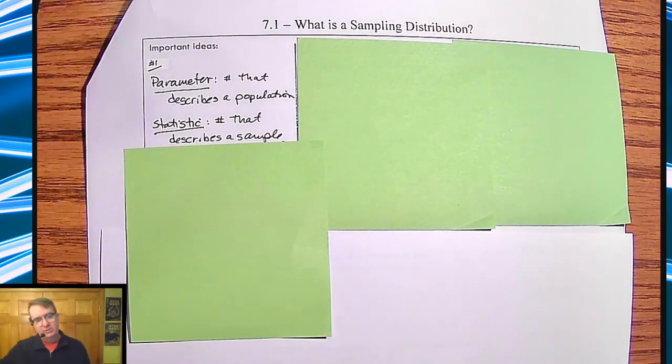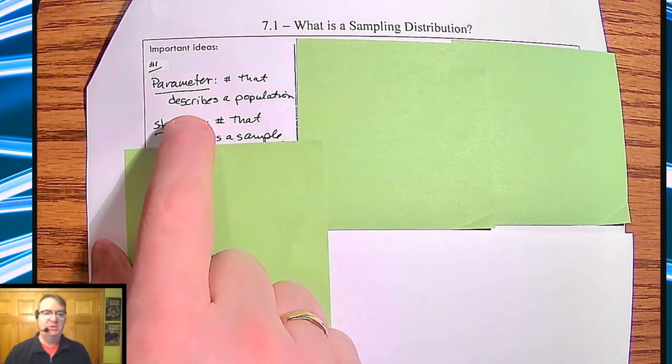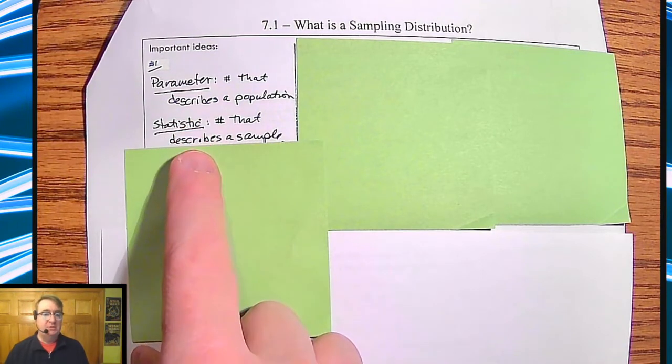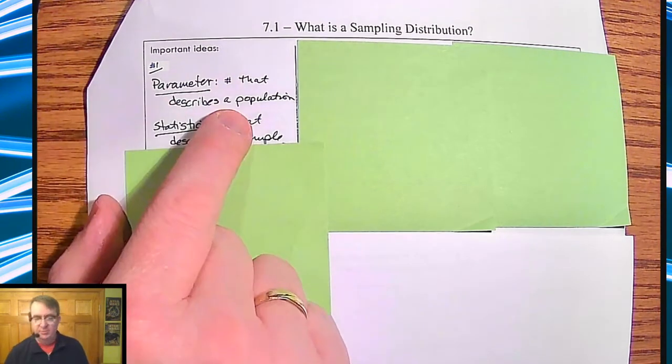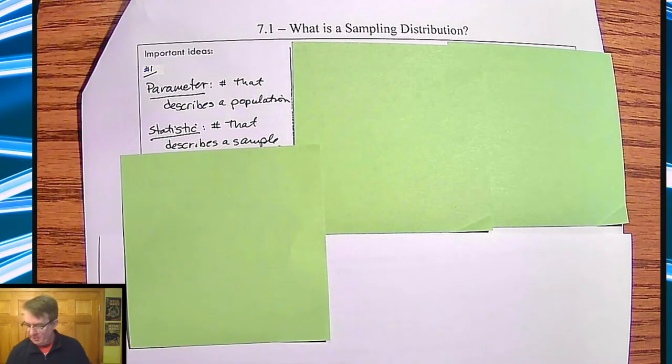And we're talking about sampling distributions. Just as a quick reminder, because beginning of the year was a long time ago, parameters are numbers that describe a population, and statistics are numbers that describe a sample. And the way that I always talk about it, and I know Common Core says don't teach them tricks, parameter, population, statistic, sample, PPSS.